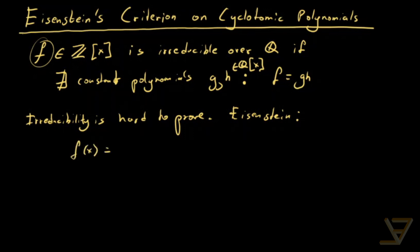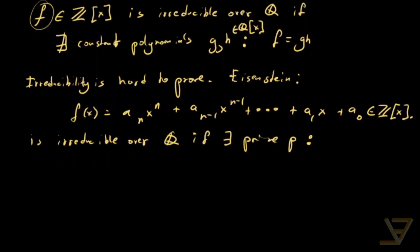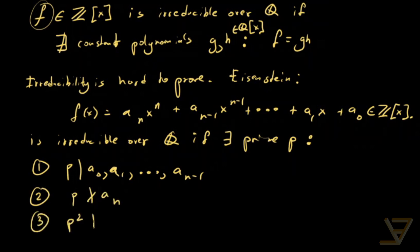So suppose f(x) equals a_n x^n plus a_(n-1) x^(n-1) all the way through to a_1 x plus a_0, with integer coefficients. Then this is irreducible over the rationals if there exists a prime p such that several conditions hold. First, p divides a_0, a_1, all the way through to a_(n-1). Secondly, p cannot divide a_n. And thirdly, p squared cannot divide a_0.